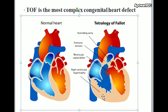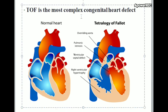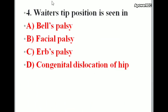Right ventricular hypertrophy is the abnormal enlargement of the muscle mass of the right ventricle. Next question: Waiter's tip position is seen in — options: Bell's palsy, facial palsy, Erb's palsy, congenital dislocation of the hip. Correct answer is Erb's palsy.